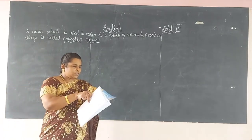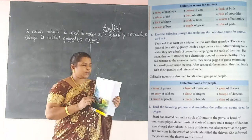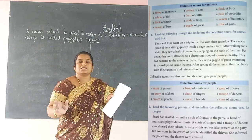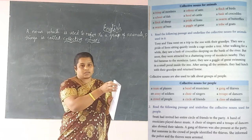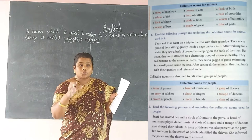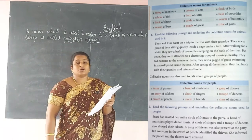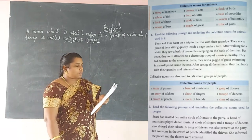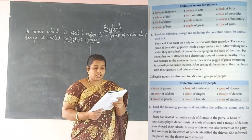Now see page number two in your grammar book. This blue tabular column is very important and you must learn and write it. For animals: for monkeys we use 'troop,' for fish we say 'school of fish,' 'flock of sheep,' 'swarm of bees,' 'colony of ants,' 'herd of cattle,' 'a pride of lions.'